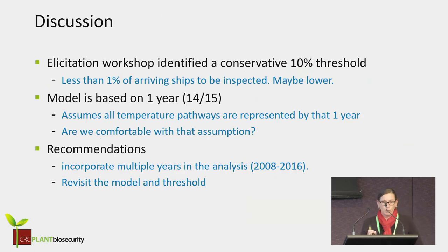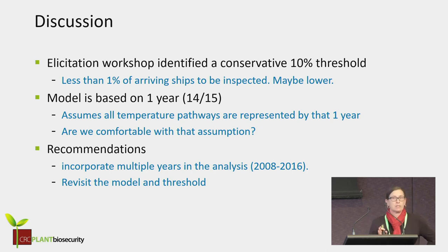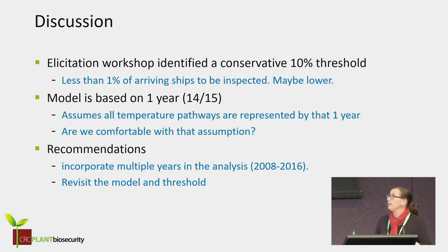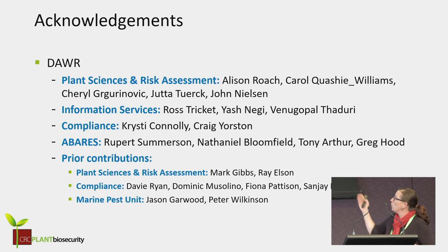The elicitation workshop concluded with a 10% threshold: any ship falling into a node where class 2 and class 3 combined exceeds 10% would be targeted for inspection, potentially fewer than 12 ships per year — a very promising result. One key caveat is that the model is based on only one year of data, and given the rarity of the event, multiple years of data would be valuable to refine and validate the model. We discussed seeking additional funding to complete that work and revisit the model and threshold.